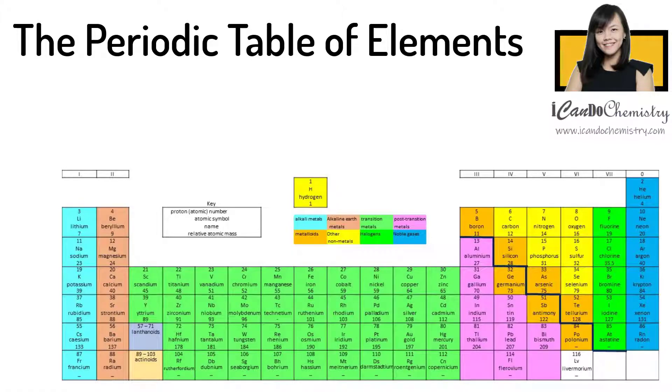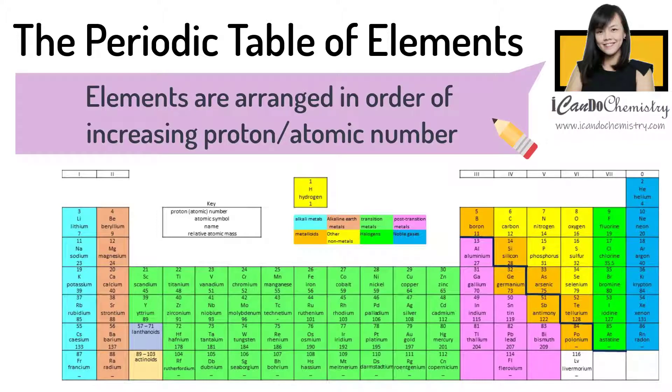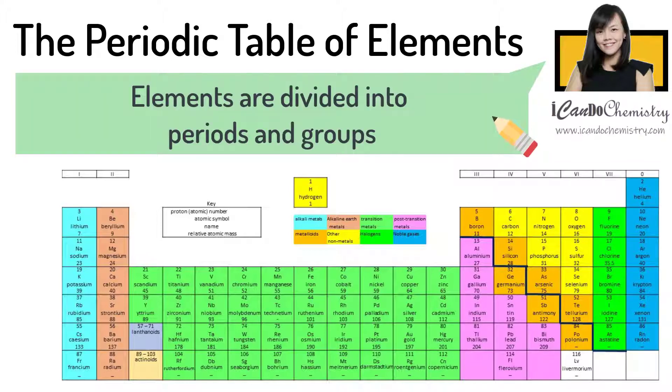The periodic table is a list of elements arranged in order of increasing proton numbers, or as we can say, the atomic numbers. The periodic table divides the elements into periods and groups.